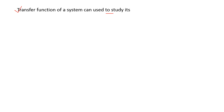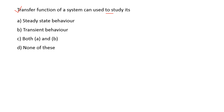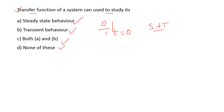Next: the transfer function of a system can be used to study its — options are: steady state behavior, transient behavior, both A and B, none of these. The transfer function is defined as the Laplace transform of output to the Laplace transform of input with initial conditions zero. Using the transfer function we can study both steady state behavior and transient behavior. So option C is the right answer.